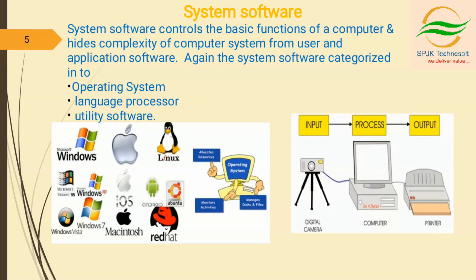Coming to the system software. System software is defined as a collection of programs that controls all over applications and the internal working of a computer system. It reads data from the input device and transfers the processed information to output devices. This diagram shows the collection of programs that controls all applications.